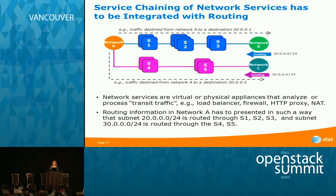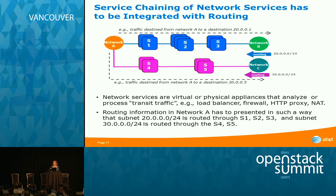The routing for 30.0.0.0 must be adjusted so that when traffic leaves network A, it's attracted to the correct chain, and when it leaves the chain it's forwarded to destination 30.0.0.5. Without integrating service chaining with routing, this cannot happen automatically. You cannot go around configuring static routes everywhere because new prefixes are injected all the time — it's a fully dynamic scenario.